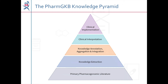The PharmGKB Knowledge Pyramid provides users with an overview of the different types of information found in our knowledge base and shows how this information is acquired and integrated together. This short video will describe PharmGKB's work at each step of the pyramid, from the accumulation of pharmacogenomic knowledge at the bottom of the pyramid to the implementation of pharmacogenomics in the clinic at the top.